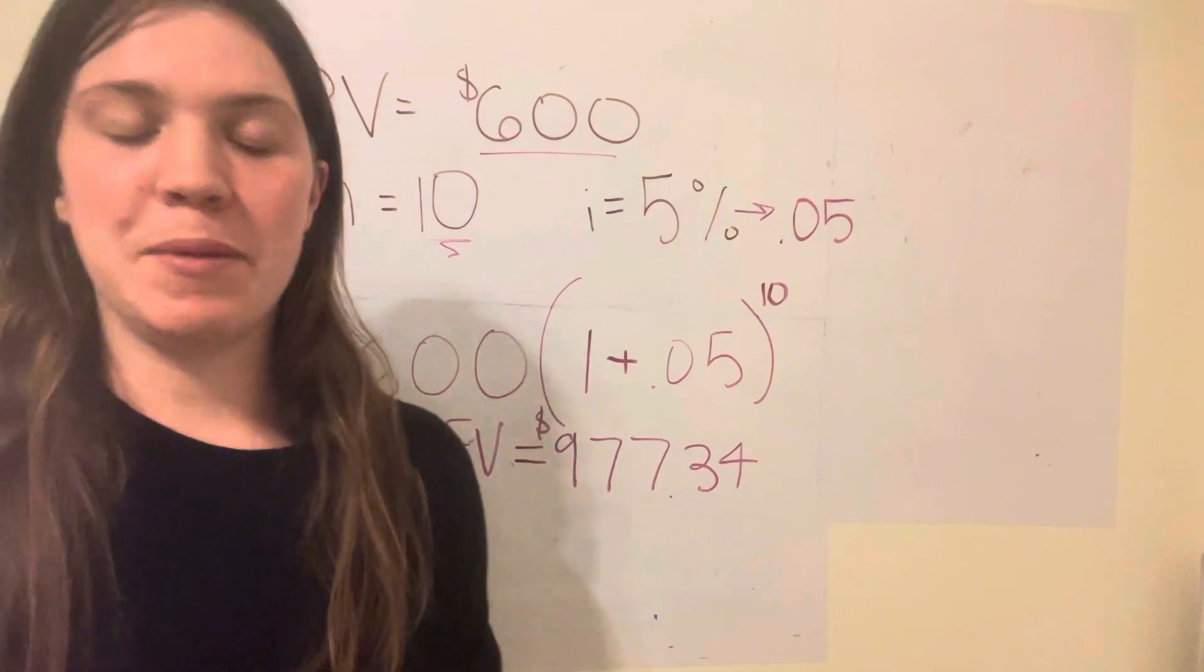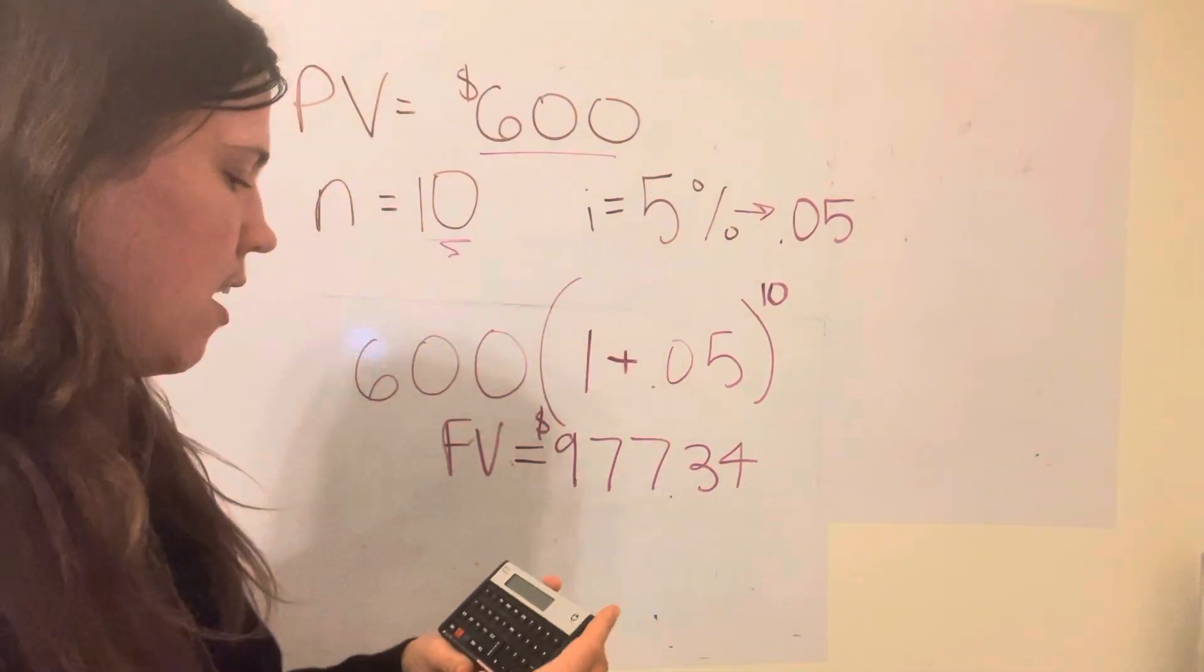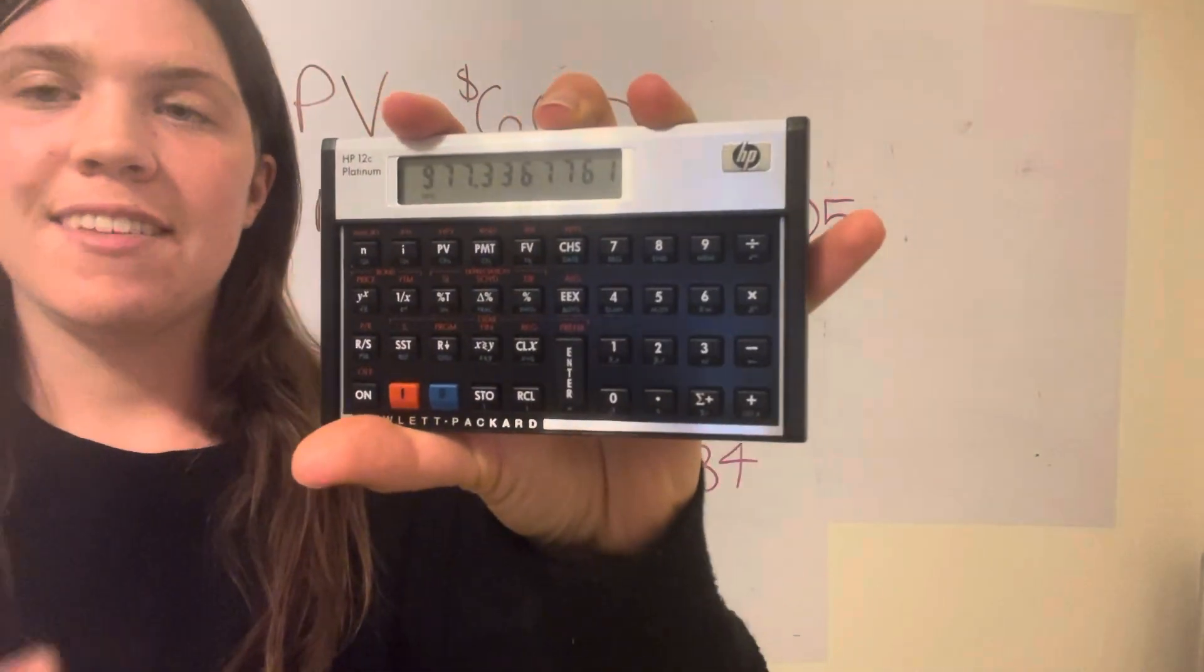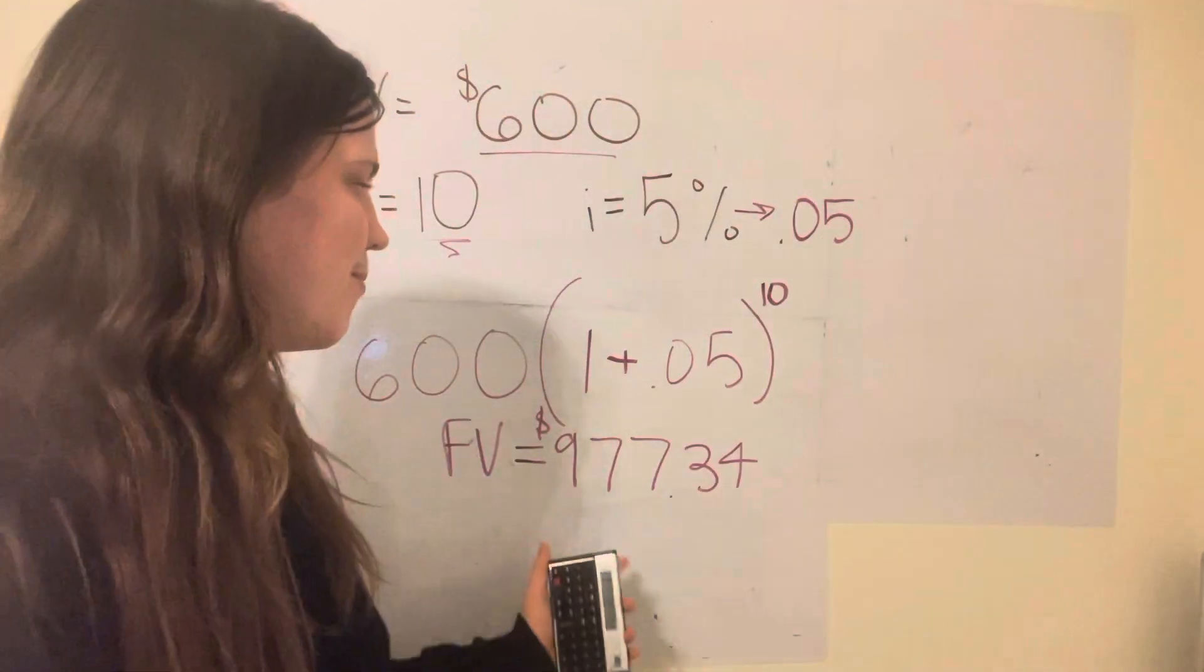But n is going to be 10, i is going to be 5, negative 600 to present value, and that should give you that same answer for future value. There you go.